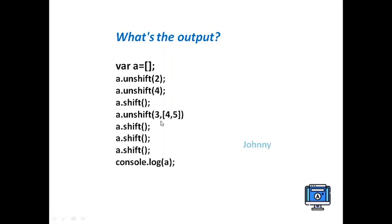Next, a.unshift([3,4,5]) adds an array element at the beginning. Now we use shift operations, which remove elements at the beginning. First the 3 element is removed, next the 4 element, next the 5 element. So the last element remaining is 2. The output of console.log(a) will be 2.